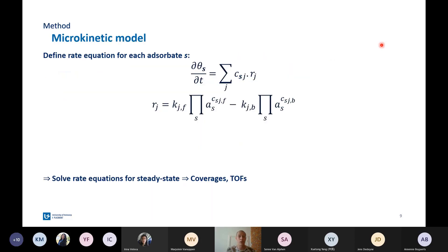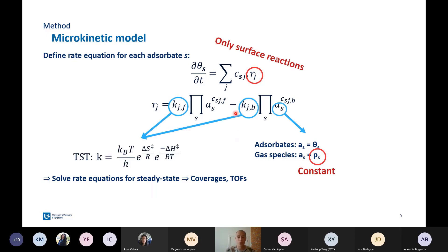I studied this via a microkinetic model. For this microkinetic model, you're going to define rate equations, which describe the change of the surface coverage of the adsorbate S over time. This change, of course, depends on the reaction rates of the reactions in the model, and these reaction rates, in turn, depend on the activity of the species, which for adsorbate species at the surface is the surface coverage, and for gas phase species, this is the partial pressure. But this partial pressure in my model is kept constant because I only have surface reactions, so I'm not studying the plasma reactions yet. The reaction rate also depends on the rate constant, and the rate constant is determined by the entropy of activation and the enthalpy of activation, which we calculate from DFT.